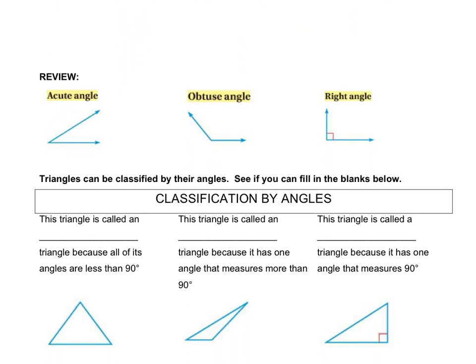Now, talking about angles again — this is something we have done in the past — we want to remind ourselves that an acute angle is less than 90 degrees, an obtuse angle is greater than 90 degrees but less than 180 degrees, and a right angle is equal to 90 degrees.